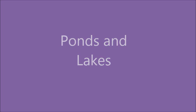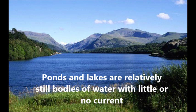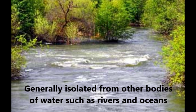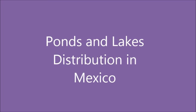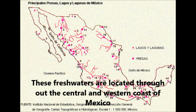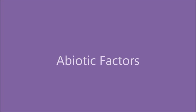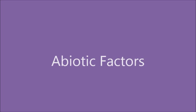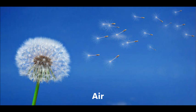Ponds and Lakes. Ponds and lakes are relatively still bodies of water with little or no current, generally isolated from other bodies of water such as rivers and oceans. These freshwaters are located throughout the central and western coast of Mexico. Abiotic Factors: air and freshwater.